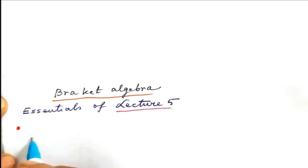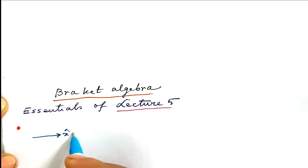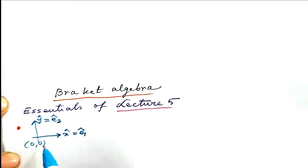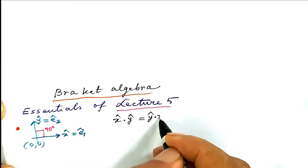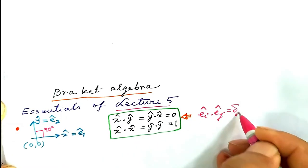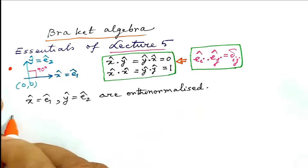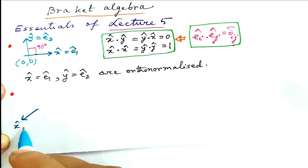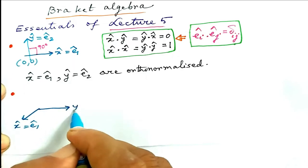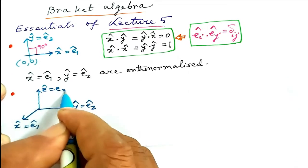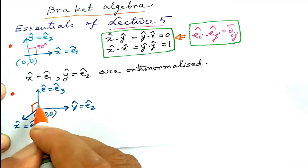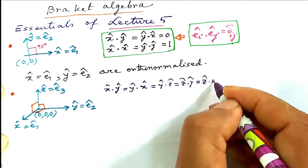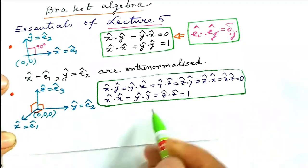If we consider a region defined by the unit vectors x-cap (or e1-cap) and y-cap (or e2-cap) mutually inclined at 90 degrees, an important property of these two unit vectors is that they are auto-normalized. Similarly, if we include z-cap (or e3-cap), all three mutually inclined at 90 degrees, the three unit vectors are also auto-normalized.